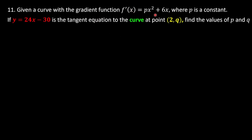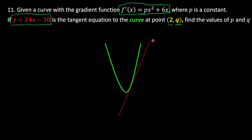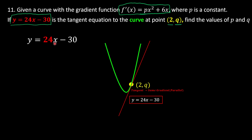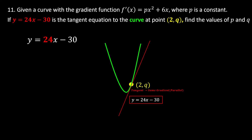Question 11: given a curve with gradient function px² + 6x, where p is a constant — this is the gradient function, not the equation of the curve. The line y = 24x - 30 is tangent to the curve at point (2, q). Let's draw the curve and the tangent line for illustration. Since it's a tangent, they share the same gradient at that point. The gradient of the line y = 24x - 30 is 24, so the gradient of the curve at x = 2 is also 24.